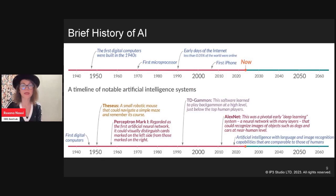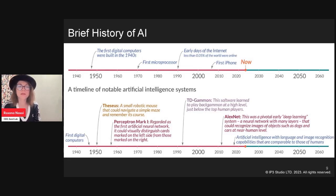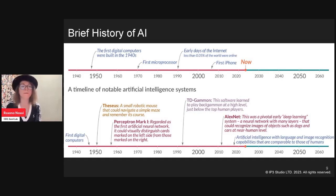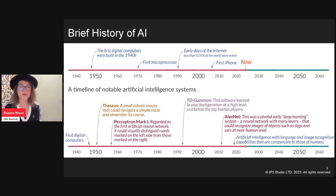Before going into the AI and Web3 merger, let me walk you through a brief history of AI. The first digital computers were built in the 1940s at Penn — massive machines the size of a room. The first microprocessor was built in the 1970s. The 1990s brought the early days of the internet, with less than 0.05% of the world online, and the first smartphones came in the mid-2000s. By 2023 we have a notable timeline of AI systems that often gets ignored in favor of just talking about ChatGPT.